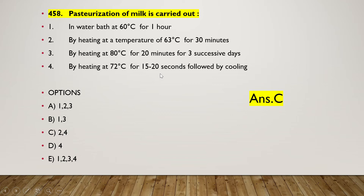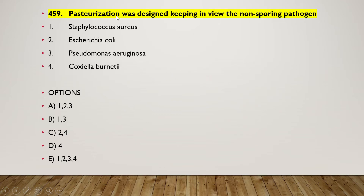The next question: pasteurization was designed keeping in view which non-spore-forming pathogen — Staphylococcus aureus, E. coli, Pseudomonas aeruginosa, or Coxiella burnetii? The right answer is option D — four — Coxiella burnetii is the right answer, which is the non-spore-forming pathogen.